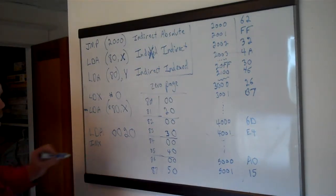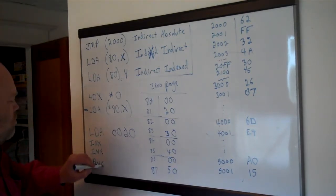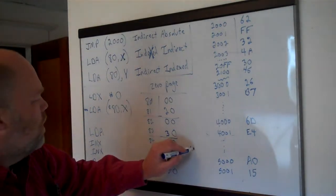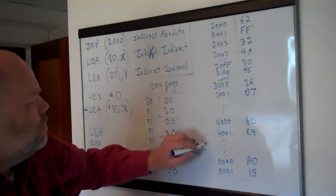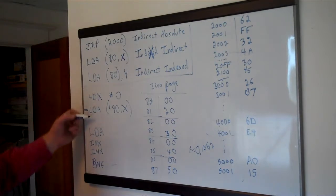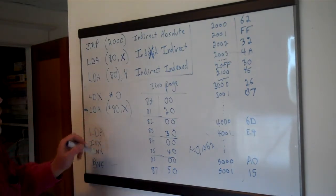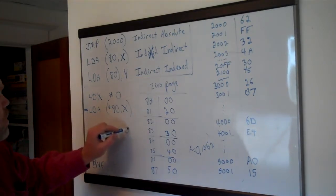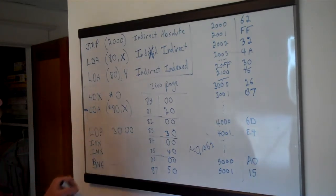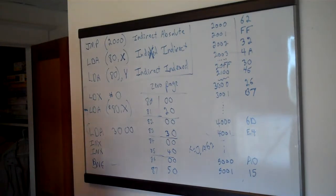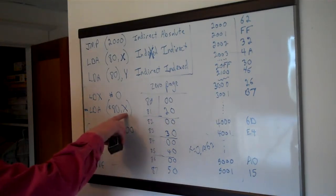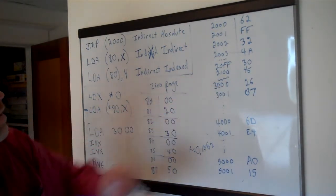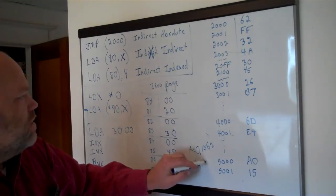You're more likely to increment X twice and branch if not equal. So the first time through when X equaled 0, A equaled 62 because it got it from 2000. The second time through, X equals 2 after being incremented twice, so 80,X is 82. It gets the low byte from 82 (which is 00) and the high byte from 83 (which is 30), and now it loads A from 3000 — getting 26. So when X equals 2, A equals 26.